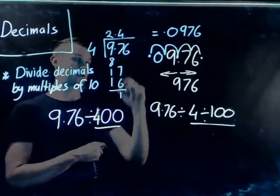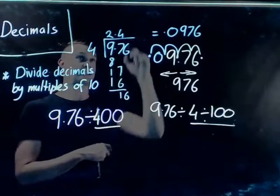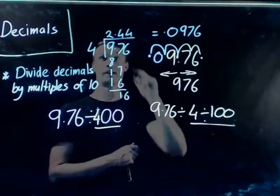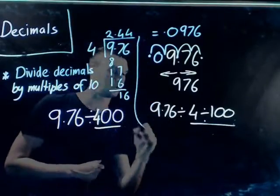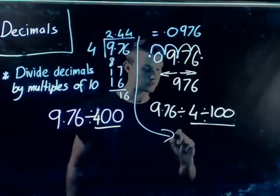One time, bring the 6 down, 4 goes into 16 4 times. So I now have my 2.44, I'll bring this down here, 2.44.